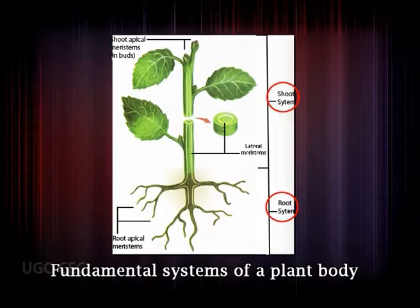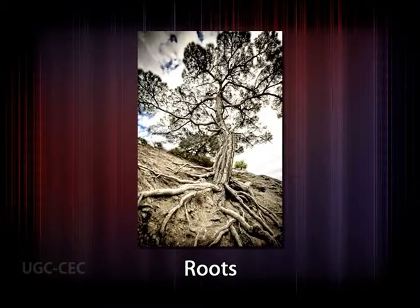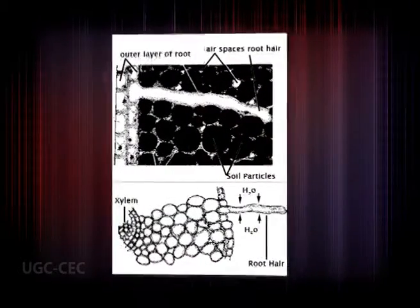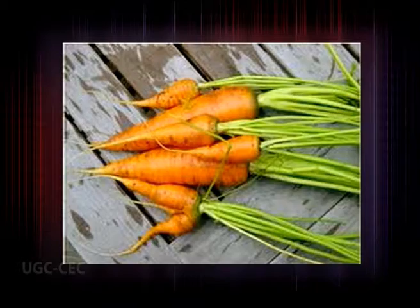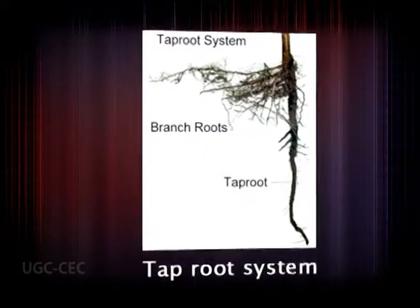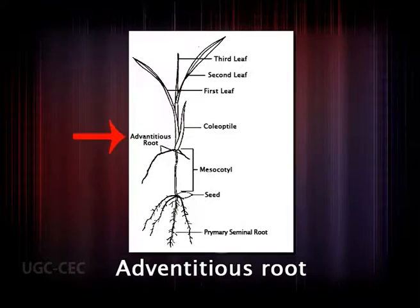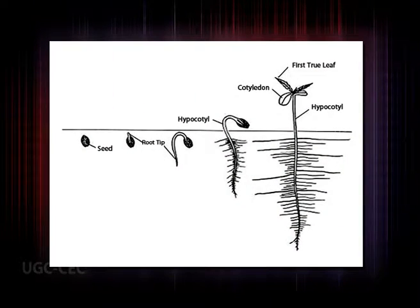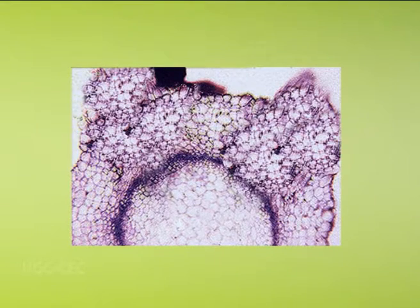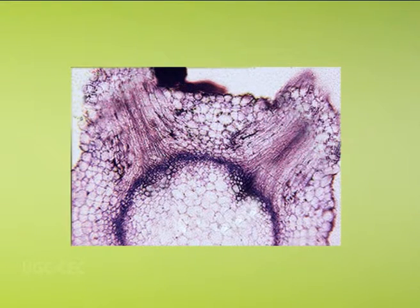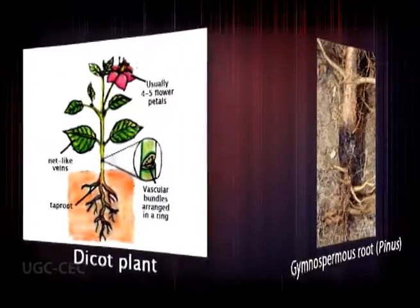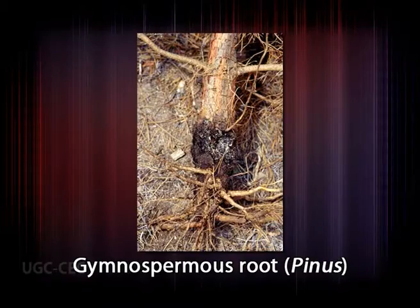The vegetative plant body of a flowering plant is composed of two fundamental systems: the root system and the shoot system, which live under different conditions. The root system anchors the plant in the soil, takes up water and mineral salts, and in many cases stores food. Two types of root systems are recognized based on their origin: the tap root system and the adventitious root system. Tap roots develop from the apex of the embryo.